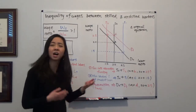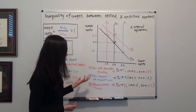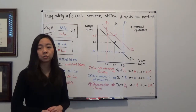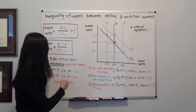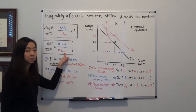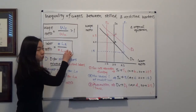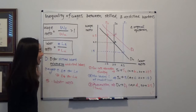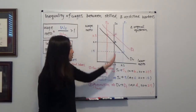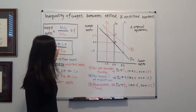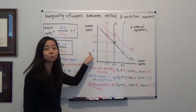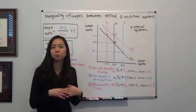In scenario two, suppose the government lowers the interest rate on student loans. That encourages more students to go to college, increasing the number of skilled laborers and decreasing the number of unskilled laborers. This causes the supply curve to shift from S0 to S1. Our new equilibrium becomes point C, the wage ratio becomes lower, and society becomes more equal.